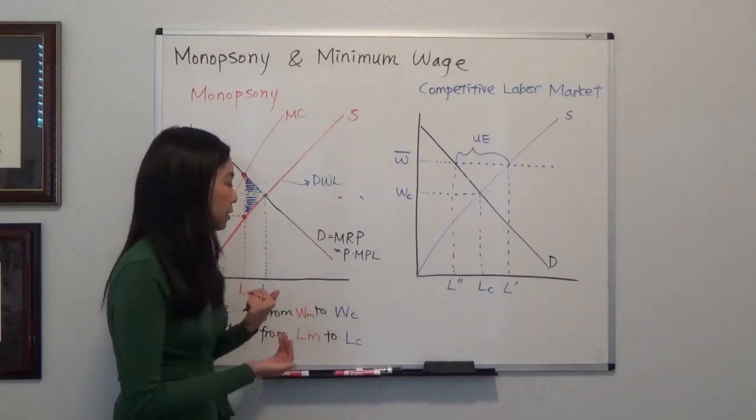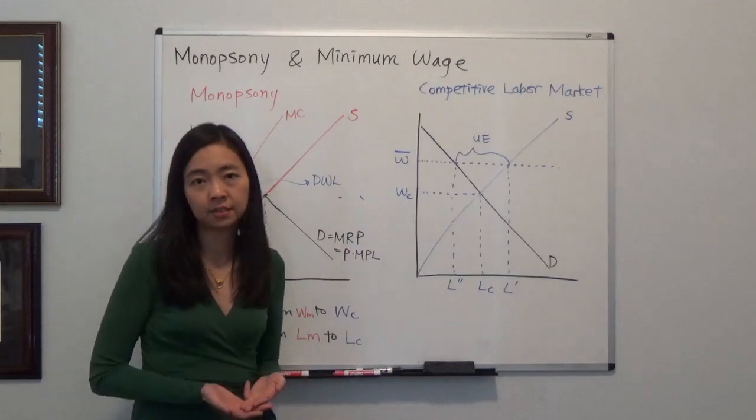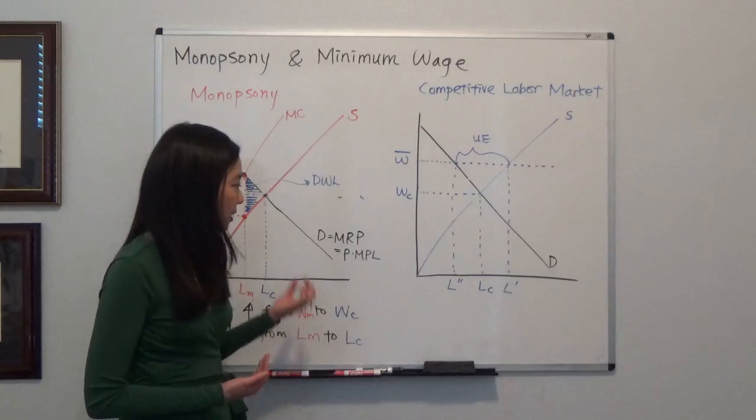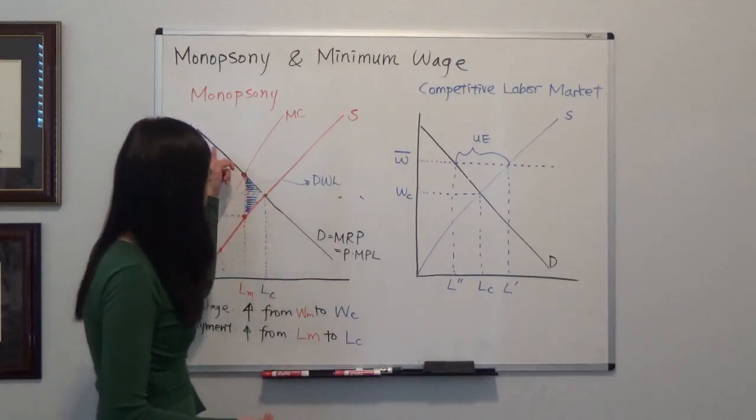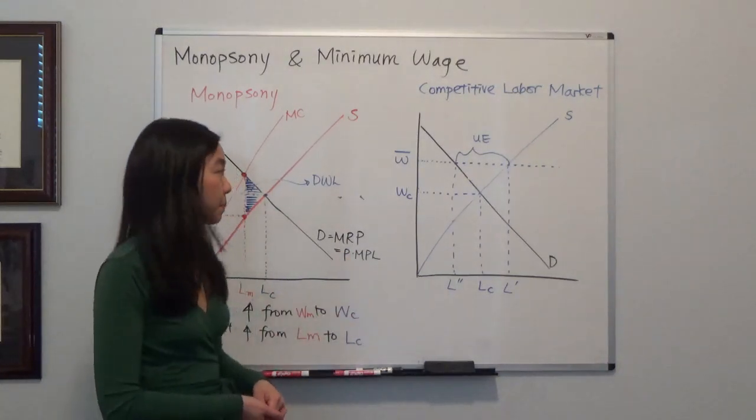So for example, if in an hour you as a worker can produce 30 products, and each product is sold for $2, then you're providing 2 times 30, $60 for the company. So the demand curve reflects the value the workers provide to the company.